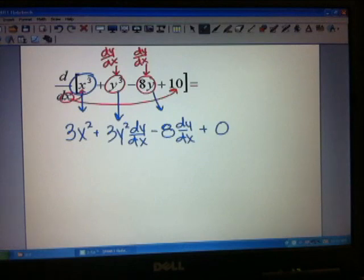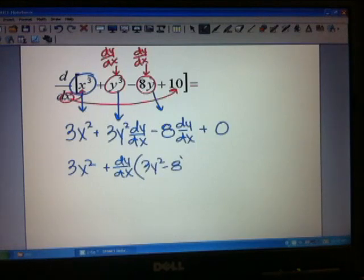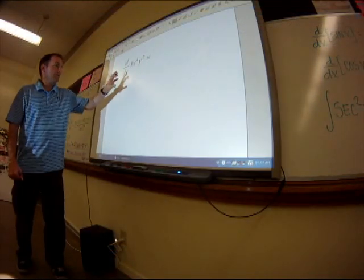So often, what you do with this is you could combine the terms that have the dy/dx. I could say this is 3x squared plus dy/dx times 3y squared minus 8. And for now, since we've just asked for the derivative, we just leave it as that.